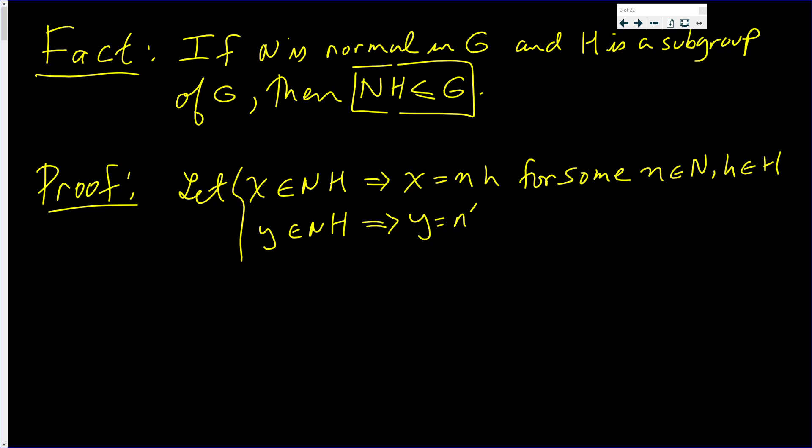Same thing for Y. Y is equal to n'h' for some n' in the normal group N, and h' in the subgroup H. So what do we know about XY? Well, X is nh and Y is n'h', so we have nh times n'h'.